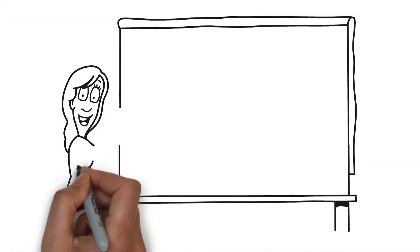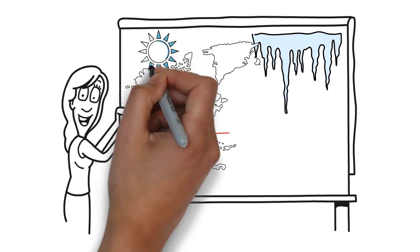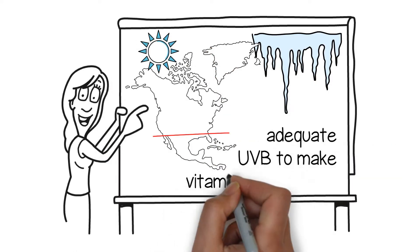However, in winter above a latitude of 35 degrees north, approximately Atlanta, Georgia, the sun does not contain adequate UVB to make vitamin D in your skin.